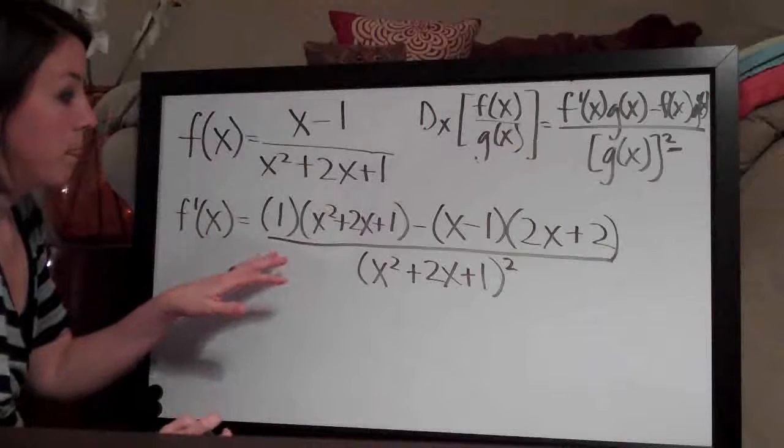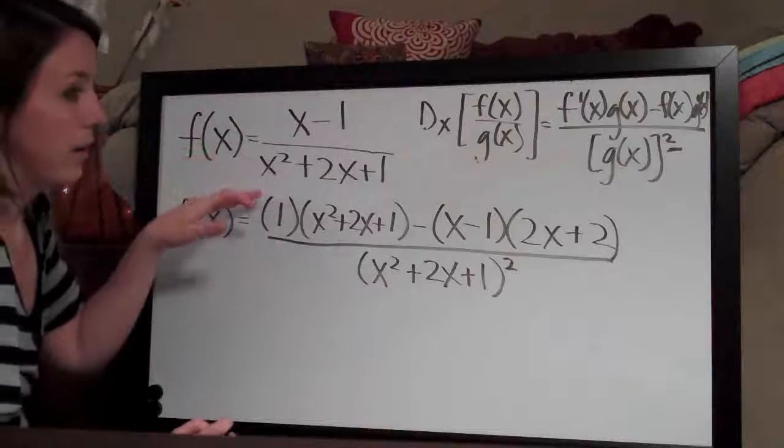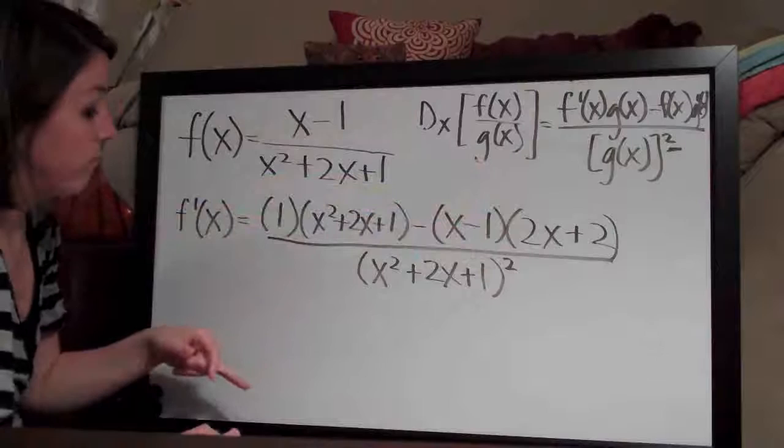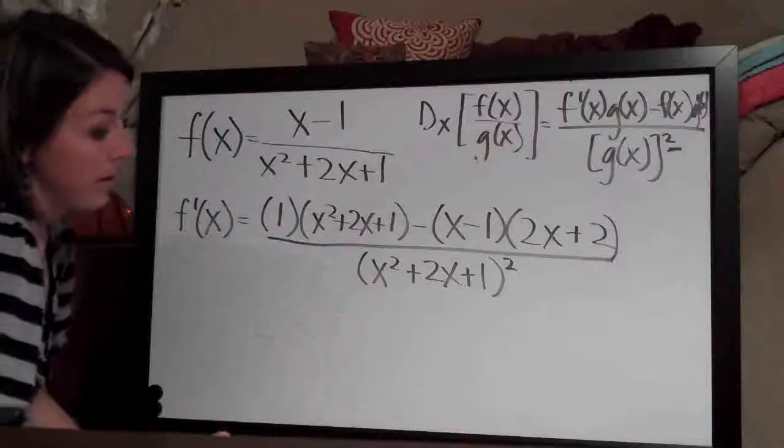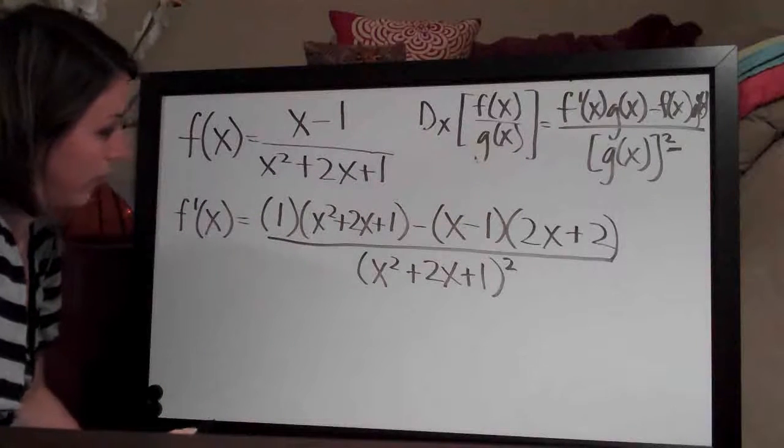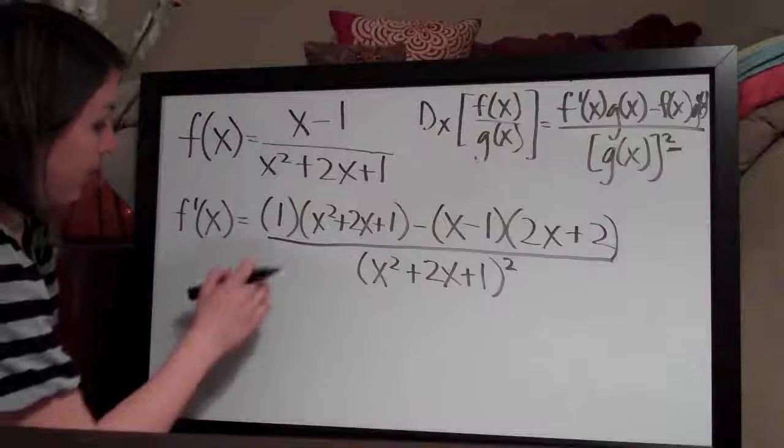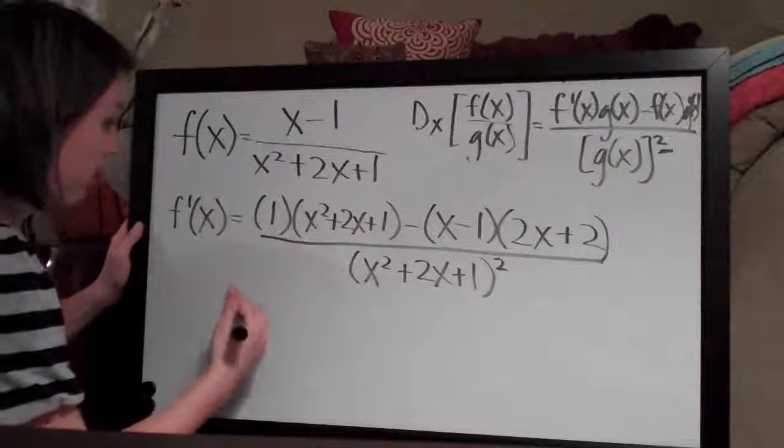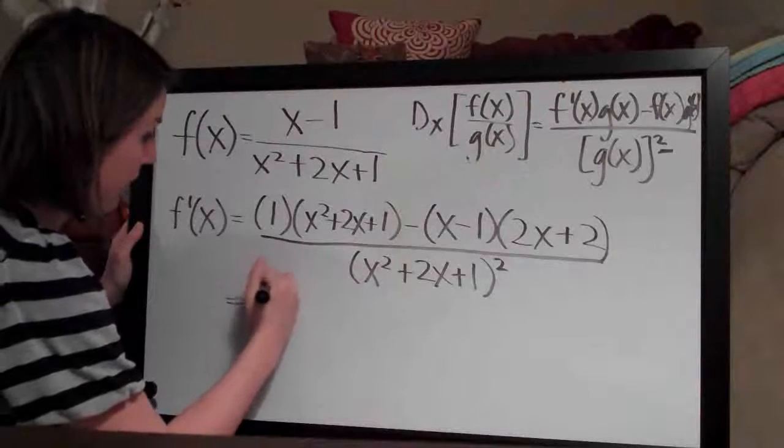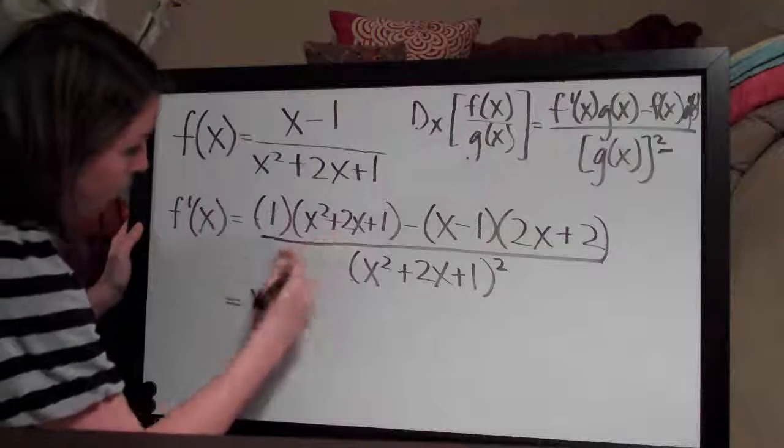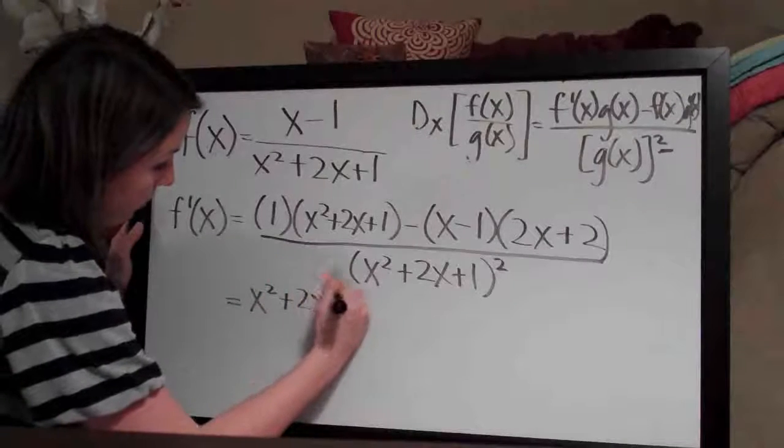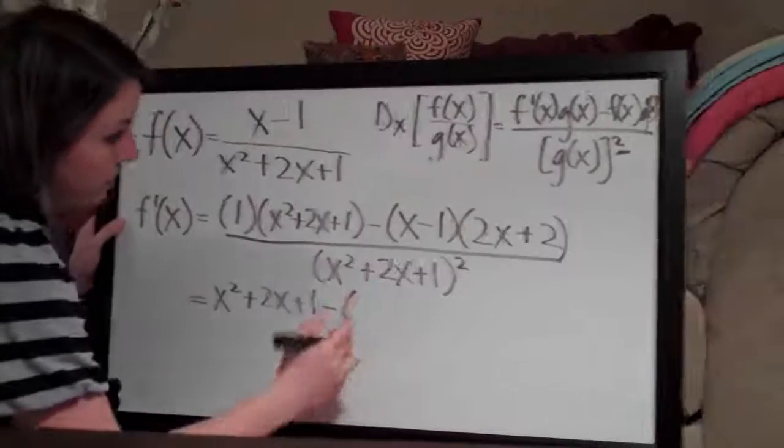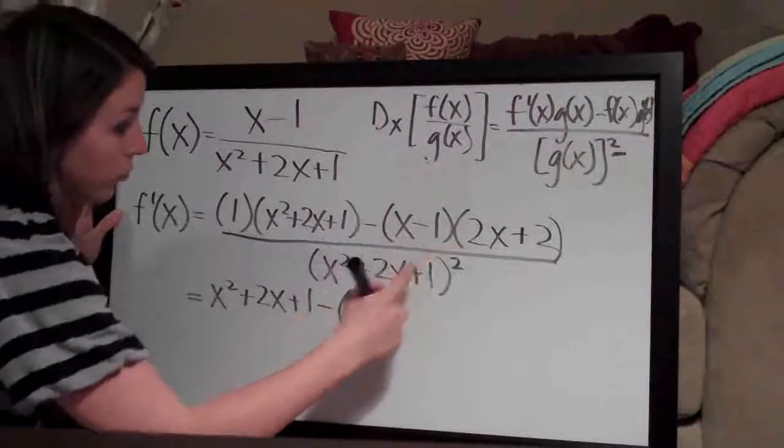So once we've taken our terms and applied them to quotient rule, all we need to do is simplify. The bottom is simplified as good as we're going to get it. Let's simplify the top. I'm going to distribute the 1, so that's x²+2x+1, and then minus, let's put this in parentheses,